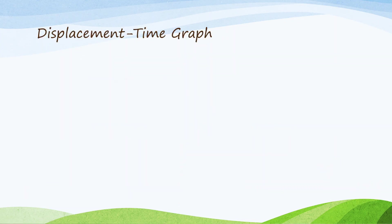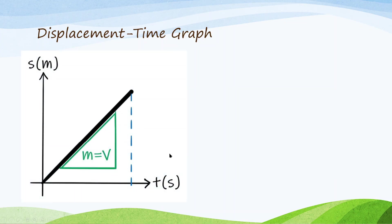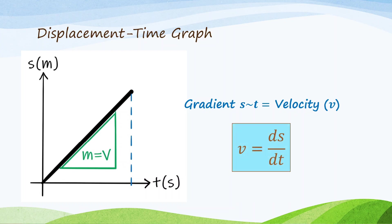So, from the four types of linear motion — stationary object, constant velocity, acceleration, and deceleration — we can learn a few things. First, the displacement-time graph: from a displacement-time graph, we can calculate the velocity from the gradient of the graph. The gradient of displacement-time graph is actually the velocity. So, velocity is equal to ds over dt — the velocity is the gradient of displacement-time graph.